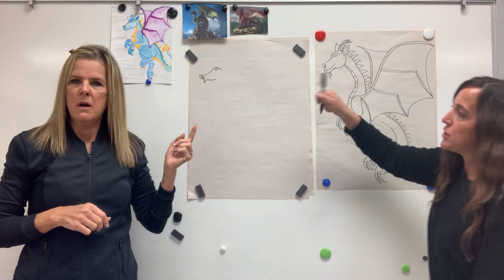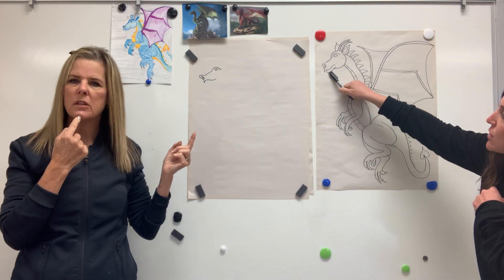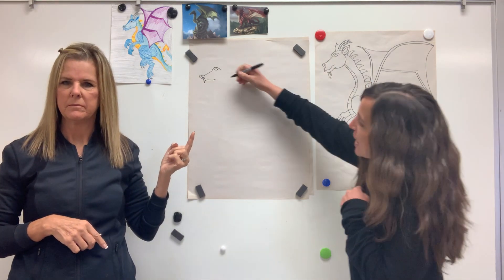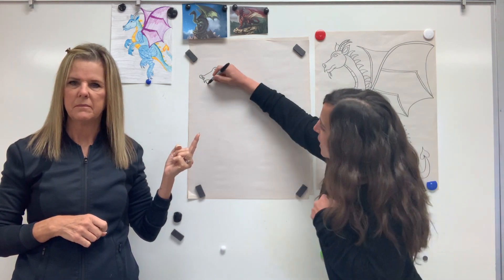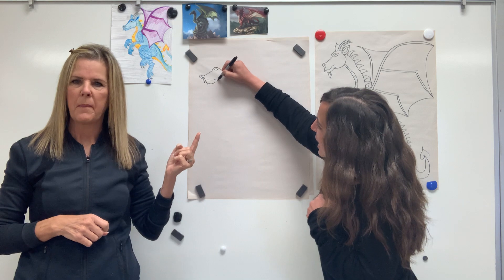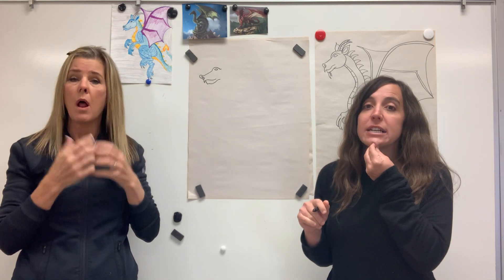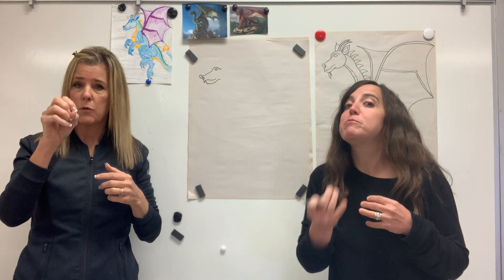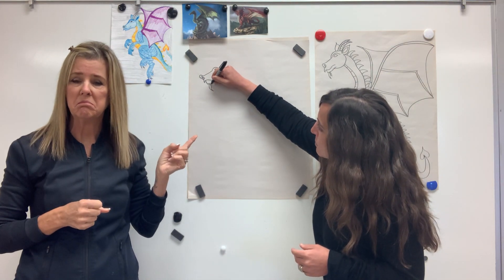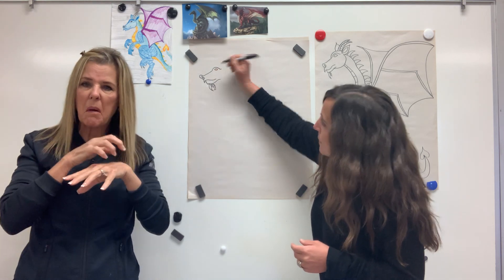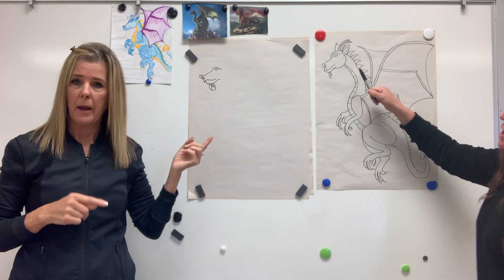Now we're going to make the bottom part of his chin. I'm going to come back a little ways because I want that point to be hanging over, then make a little short straight line that comes down. For his chin, just kind of curve it back — it can be curved or straight. If you like, a lot of artists' renderings of dragons have beards hanging down. You can make it smooth or bumpy with a little beard hanging down if you'd like.